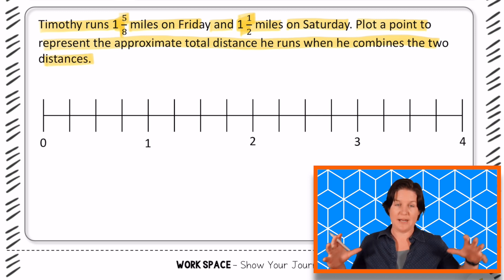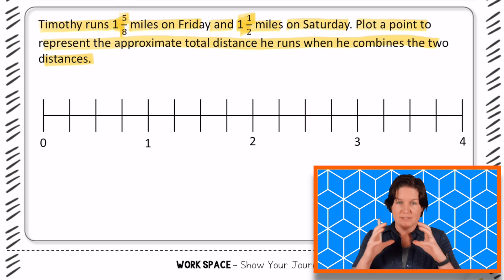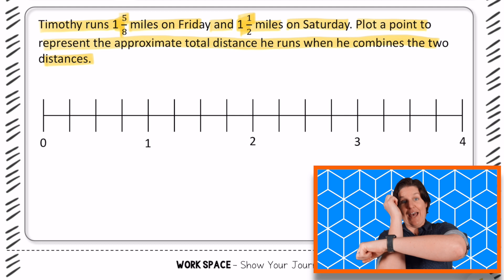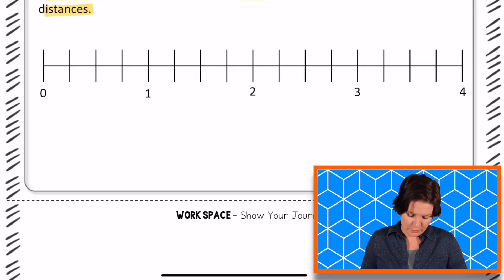So we're combining Friday's total with Saturday's to find the total. So we need to do which operation? Add them, right? Okay, so we have one and five eighths plus one and a half.